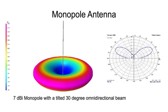Note that it sometimes tilts a little bit. This preferred direction to the side doesn't always have to be straight horizontal — it can go up or down. That's what we call tilt in antennas.